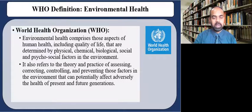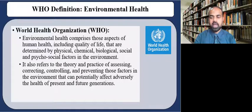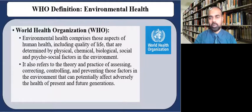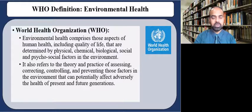Clean air, stable climate, adequate water sanitation and hygiene, safe use of chemicals, protection from radiation, healthy and safe workplaces, sound agricultural practices, health-supporting cities, and built environments are all prerequisites for good health. Healthy environments could prevent almost one quarter of the global burden of disease according to the WHO. The COVID-19 pandemic is a further reminder of the delicate relationship between people and our planet.